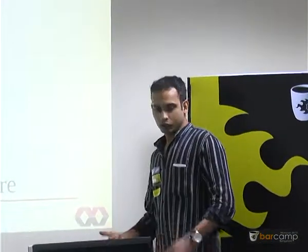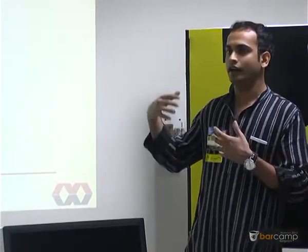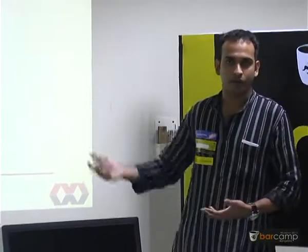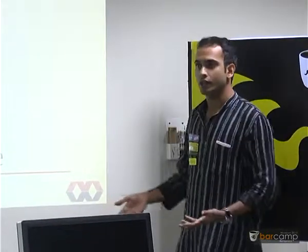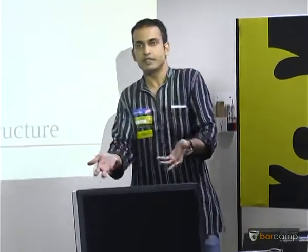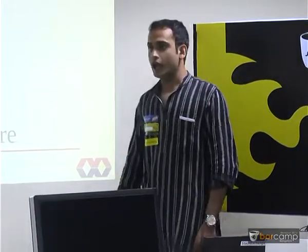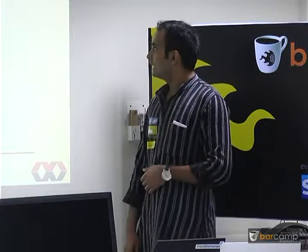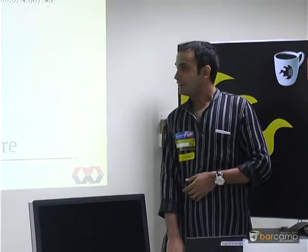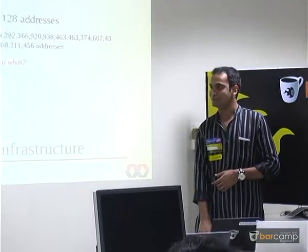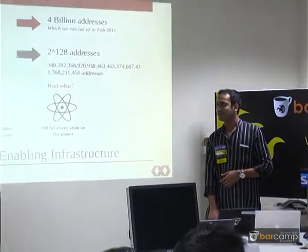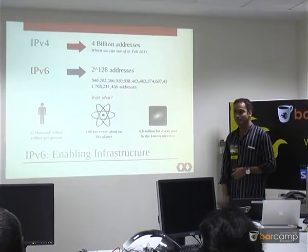How is it possible that 50 billion devices could connect to the internet? Most of you are techies, so you probably already know about IPv4 and how it had only 4 billion addresses, which we ran out of in February 2011. There was a whole panic about needing more IP addresses. So they came out with a new standard called IPv6 — there are 2 to the power of 128 addresses. That's 52,000 trillion trillion addresses per person, or 100 for every atom on the planet, or 4.8 million for every star in the known universe.